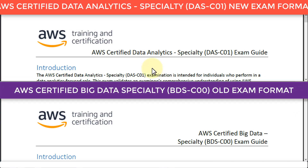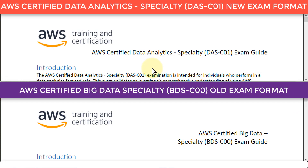I've switched to my PDF. Notice here I have two documents: on top is the new exam, the AWS Certified Data Analytics Specialty DAS-C01 exam guide, and on the bottom is the old exam.